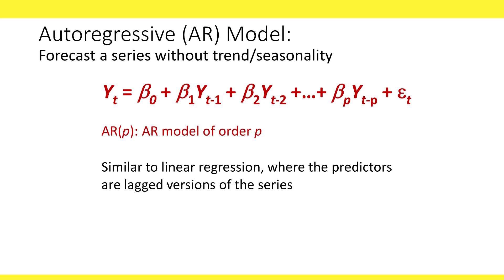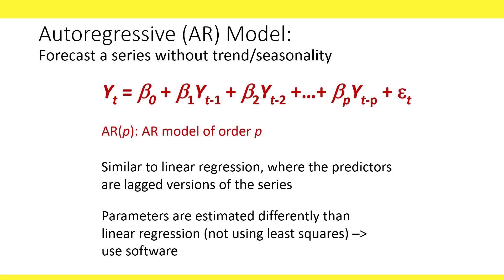Although this is a regression-type model, it's estimated differently than linear regression. Specifically, we do not use least squares, but rather a method called maximum likelihood. While we won't get into the details, note that the beta estimates will be slightly different compared to simply running this as a linear regression. For this reason, we prefer to use software that has autoregressive model functions.